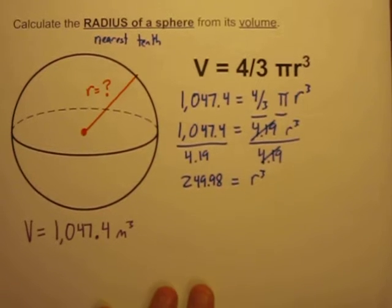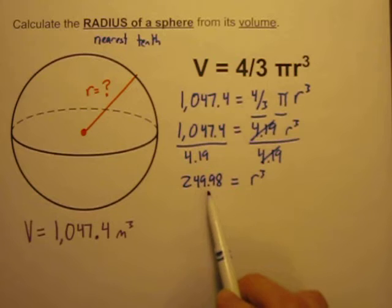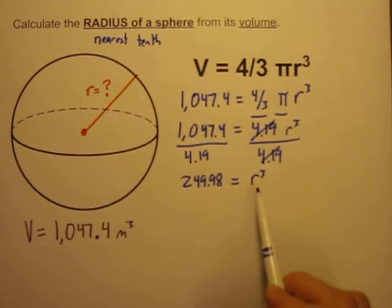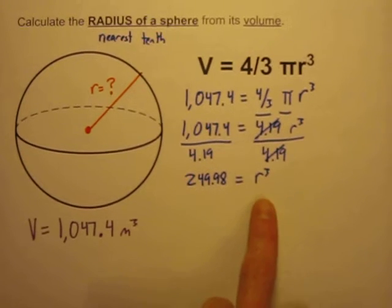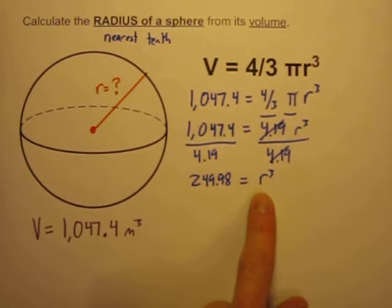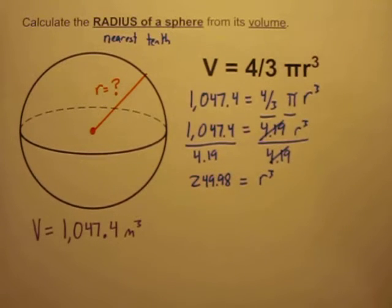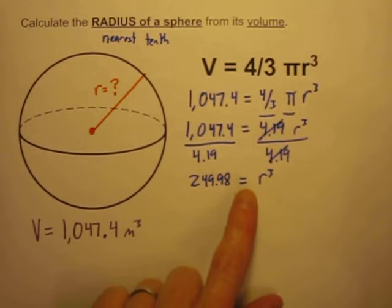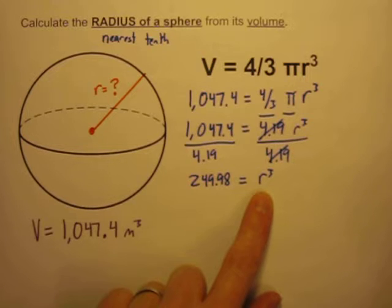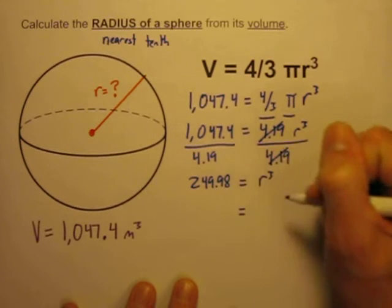Here's another part of the volume of a sphere that's a little bit tricky to work with. This 249.98 is equal to r cubed, r to the third power. So if I want to solve for r, I have to do the opposite of cubing it. The opposite of raising it to the third power, which is to take the cube root. Just like the opposite of squaring a number is to take the square root, the opposite of cubing a number is to take the cube root.